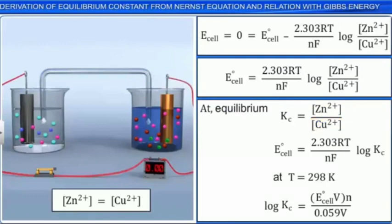In the equation, substituting the values of R and F, and of T as 298 Kelvin, we get the equation for equilibrium constant Kc as shown here.